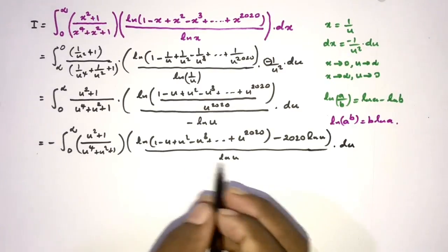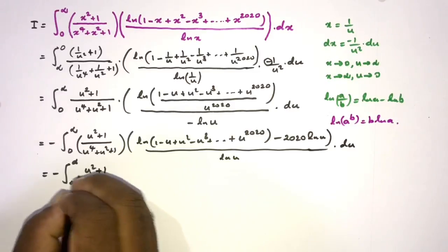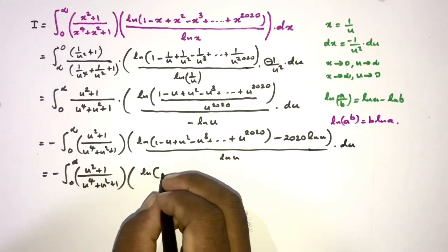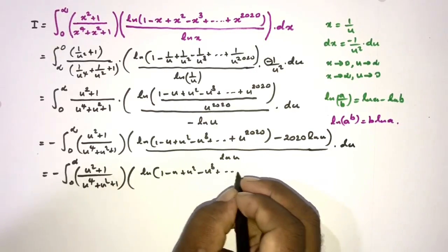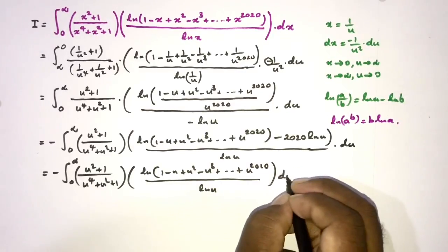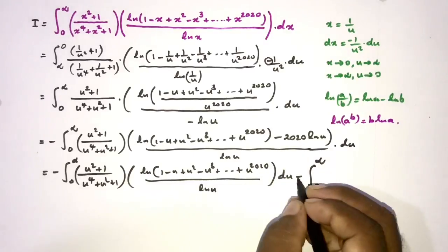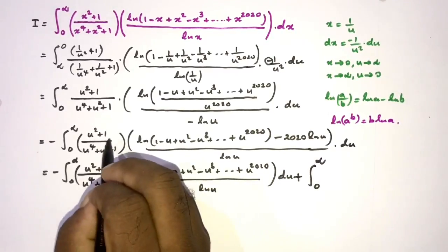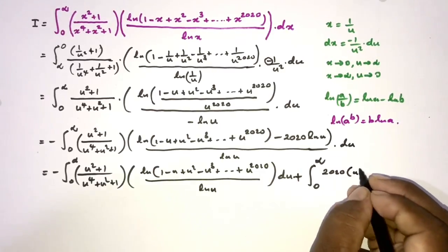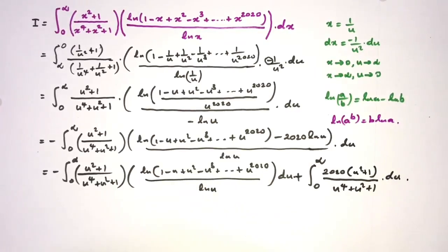We split this into two integrals. The first is minus the integral from 0 to infinity of (u squared plus 1) over (u to the fourth power plus u squared plus 1), times natural log of 1 minus u plus u squared minus u cubed plus u to the 2020, over natural log of u, du. The second term: since 2020 times natural log of u over natural log of u simplifies by cancellation, we get plus 2020 times the integral of (u squared plus 1) over (u to the fourth plus u squared plus 1) du.